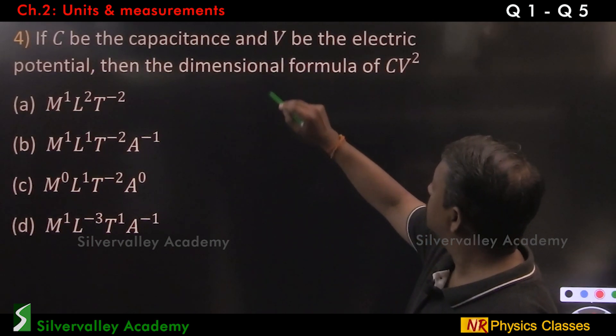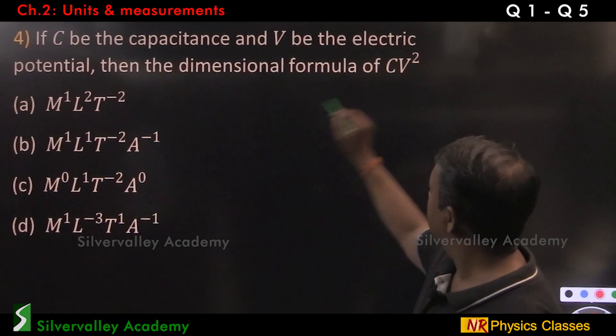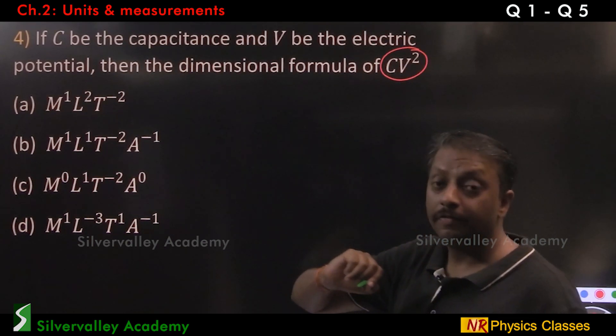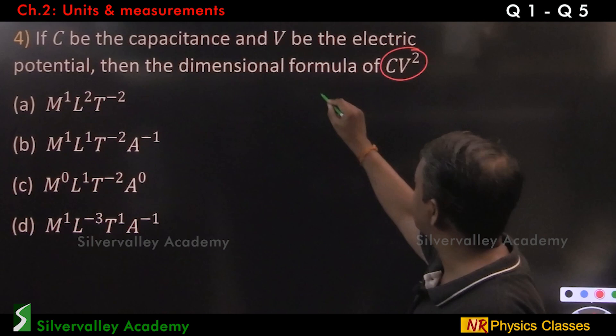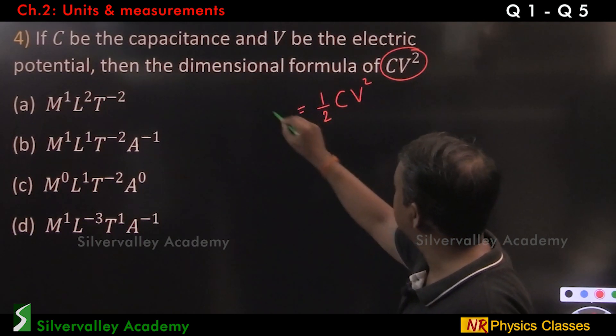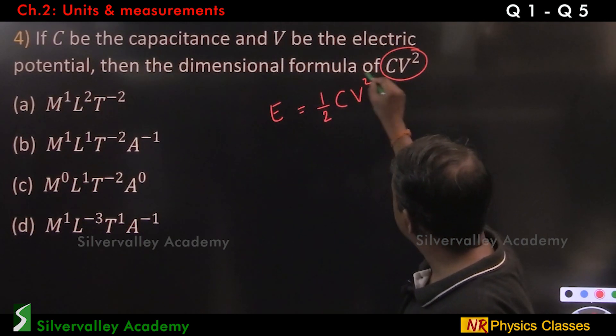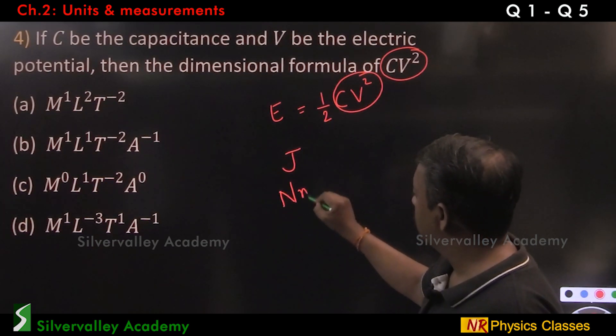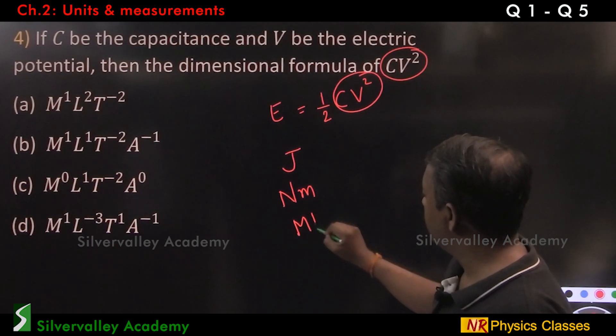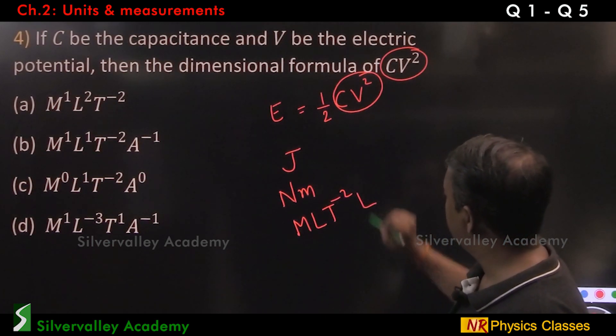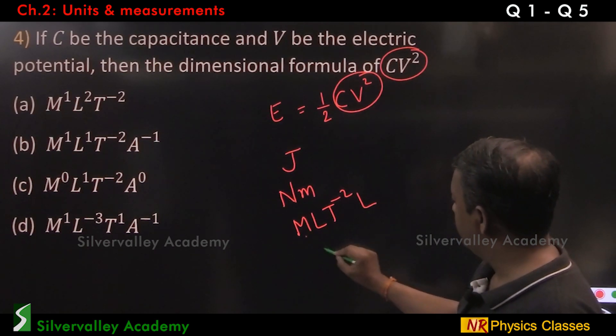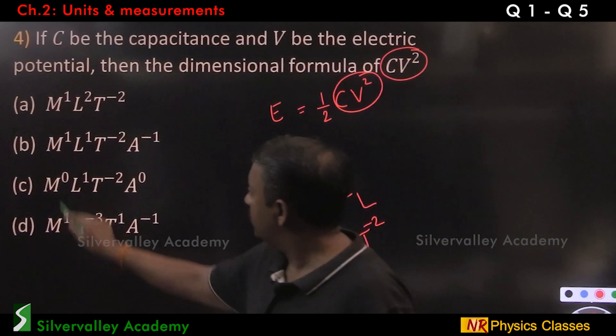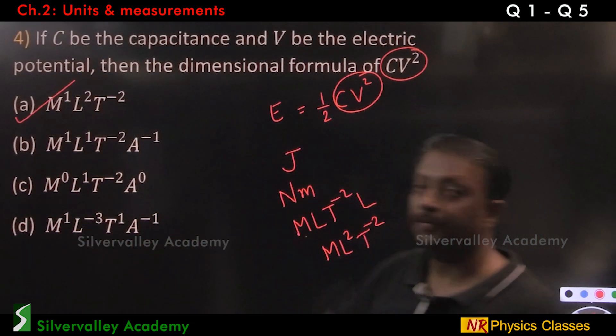If C is capacitance and V be the electric potential, then CV square. Expression for energy of a capacitor is half CV square. Half CV square is energy. Therefore, now in this case, it should be Joule. Joule is Newton meter. Newton is M L T minus 2. One more meter, L. So, M L2 T minus 2. This is the equation.